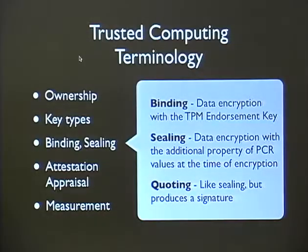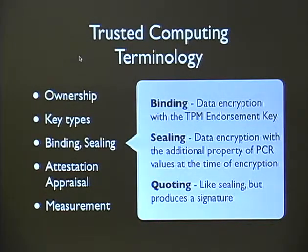There are three concepts: binding, sealing, and quoting. Binding describes data encryption with the TPM endorsement key. Sealing is more interesting — it's the encryption of data also bound to the PCR values. As you measure things the PCRs change, and when you seal data you associate it with the PCR values at time of encryption. To decrypt sealed data, your PCRs must have the same values. Quoting is like sealing but produces a signature, and we'll show ways you can use that.